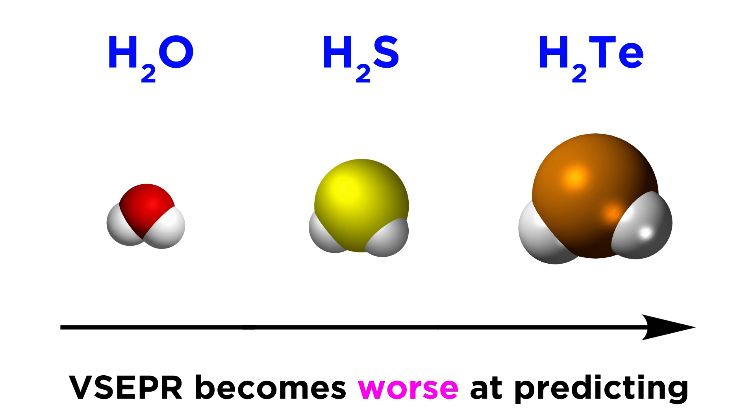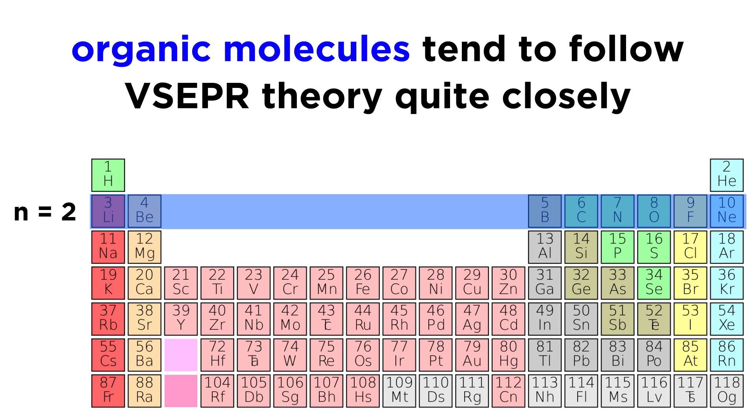So we can see that for molecules with large central atoms, VSEPR theory quickly goes out the window. But since organic molecules are filled with carbon, nitrogen, and oxygen, which are all in the second period, this theory still has abundant application in chemistry.